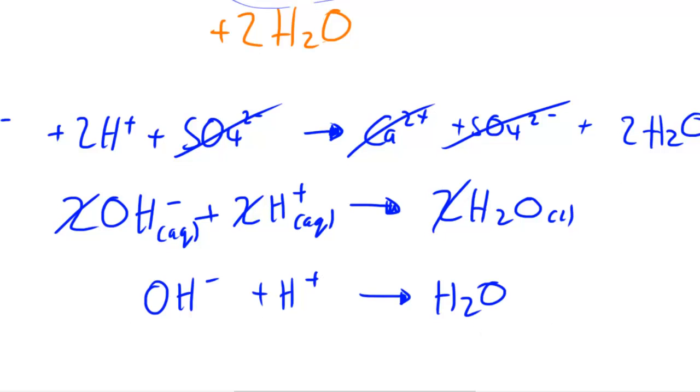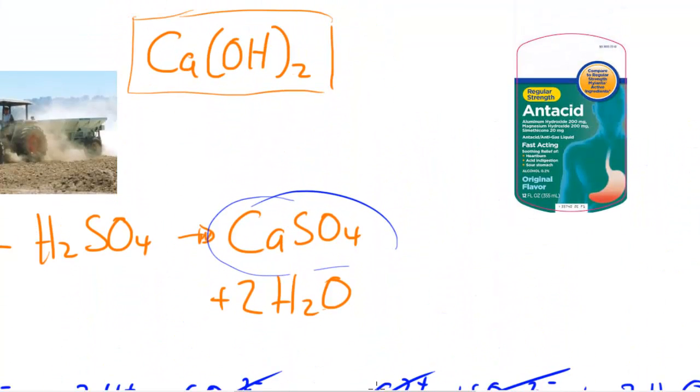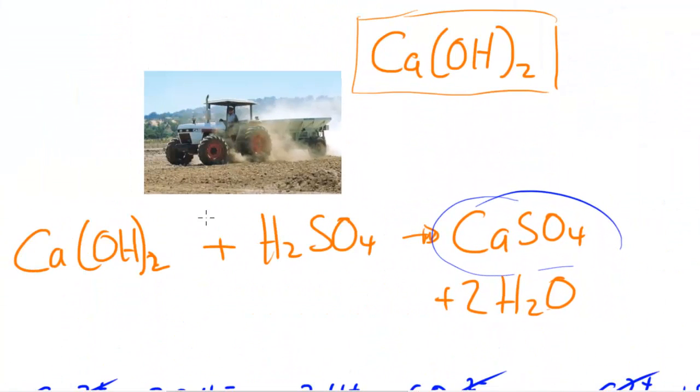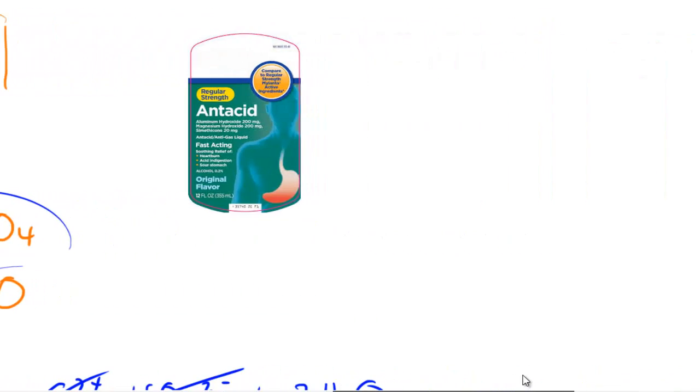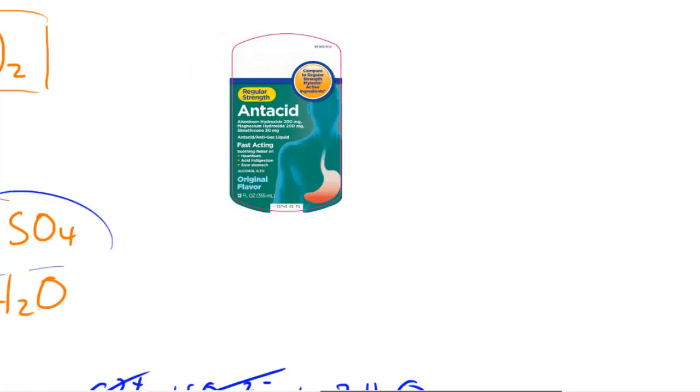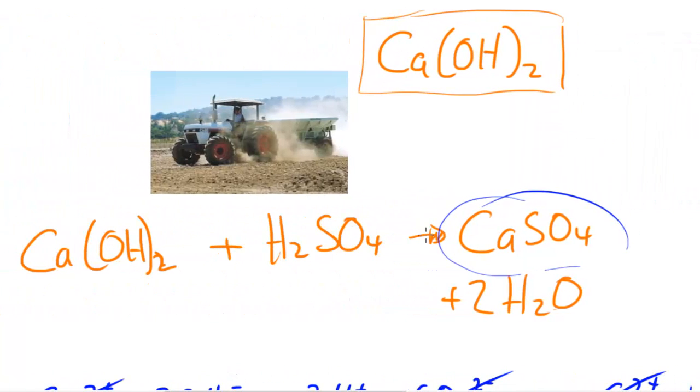It's a very simple acid-base neutralization reaction which happens between the slaked lime, the Ca(OH)2, and whatever acid is present, not necessarily this acid but whatever acid is present. So it can be used to neutralize acidic soil.